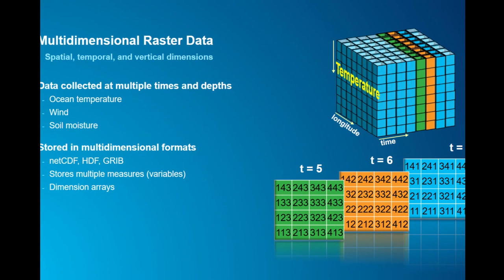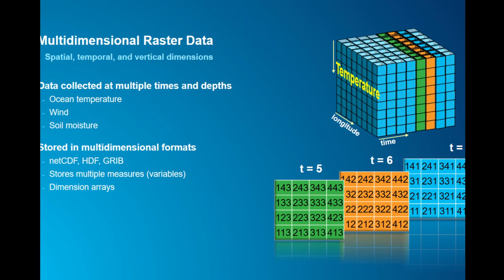So what is multidimensional raster data? We know that weather data is captured every hour, every 15 minutes — very frequently. NASA also has many Earth-observing satellites that take scientific data of the same area at very frequent intervals. So this type of data not only has the X and Y dimensions that GIS cares about, but also has time and a vertical dimension — like ocean data, like weather data. We call this type of data multidimensional data.